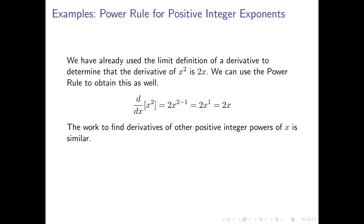If we want to find the derivative of another power function with a positive integer exponent, the work is pretty similar. Let's say we want the derivative of x to the power 5. The exponent becomes a coefficient, and we subtract 1 from the exponent, giving us 5 times x to the power 5 minus 1, or 5x to the power 4. We didn't have to do something like expanding a fifth power of a binomial, which is what we would have to do using the limit definition of a derivative.